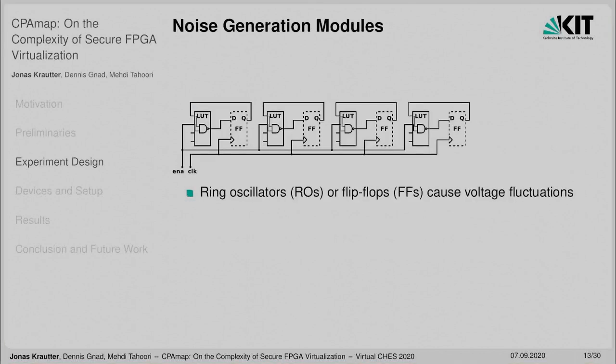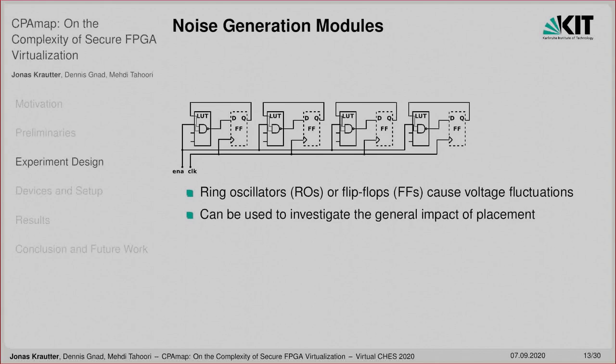For some experiments, we made use of noise generation modules based on ring oscillators or toggling flip-flops to cause voltage fluctuations in specific regions of the FPGA. These noise generation modules can be used to investigate the general impact of placement of the victim design, and can also be used as a simple hiding countermeasure when ring oscillators are randomly activated around an AES encryption module to introduce additional noise.